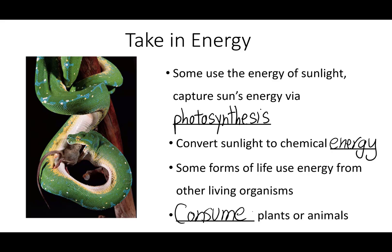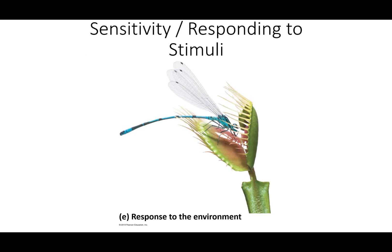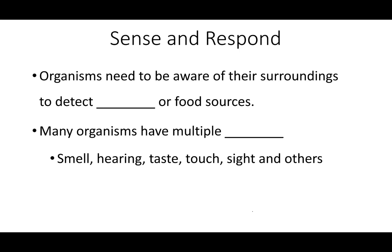Organisms need to be aware of their surroundings — they need to have sensitivity and be able to respond, whether due to the presence of danger or food sources. Many organisms have multiple senses. In humans, smell, hearing, taste, touch, sight, and others are the senses we have. These may be similar or different to the senses that other organisms have.